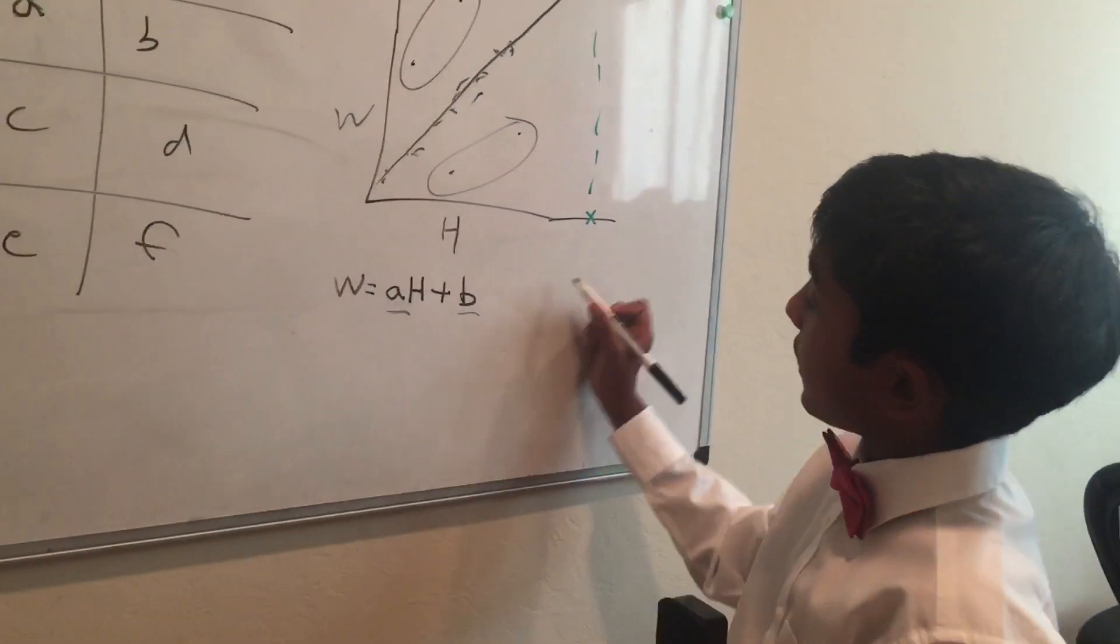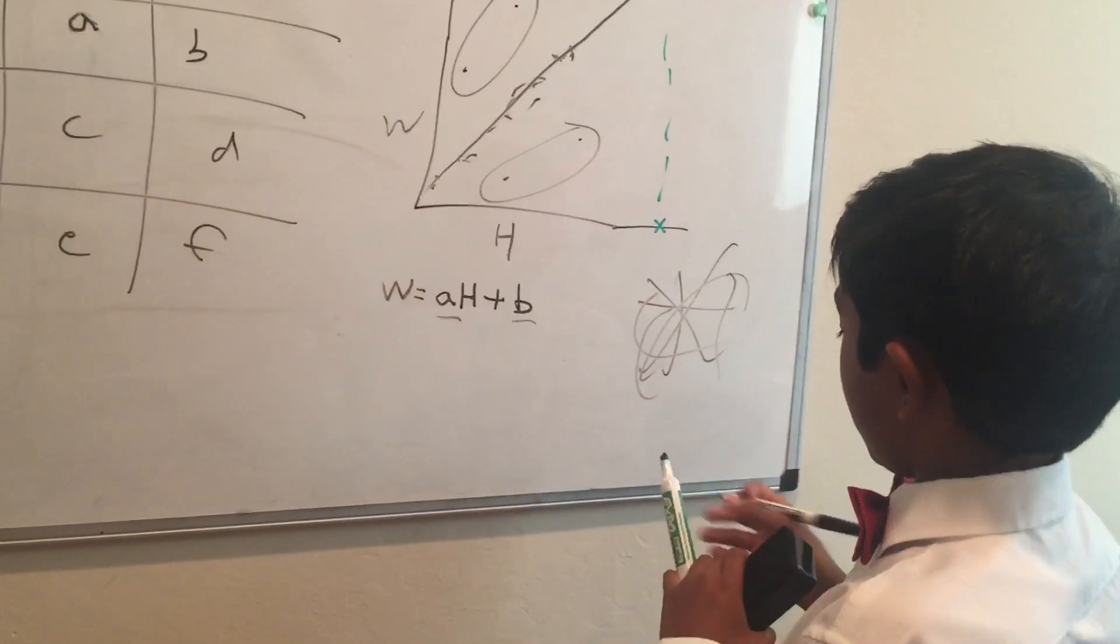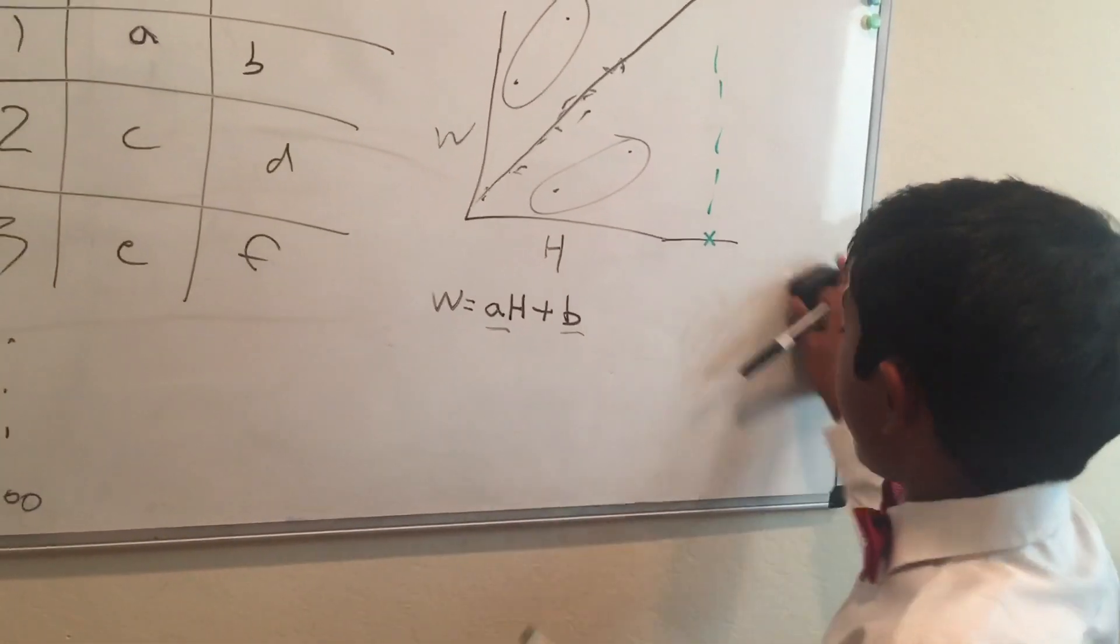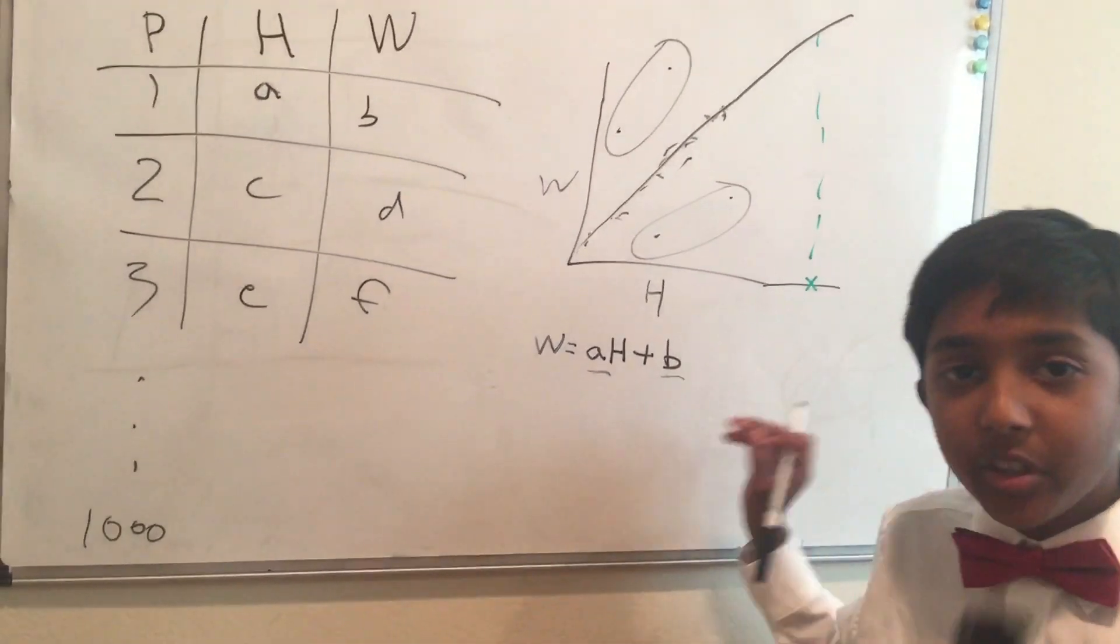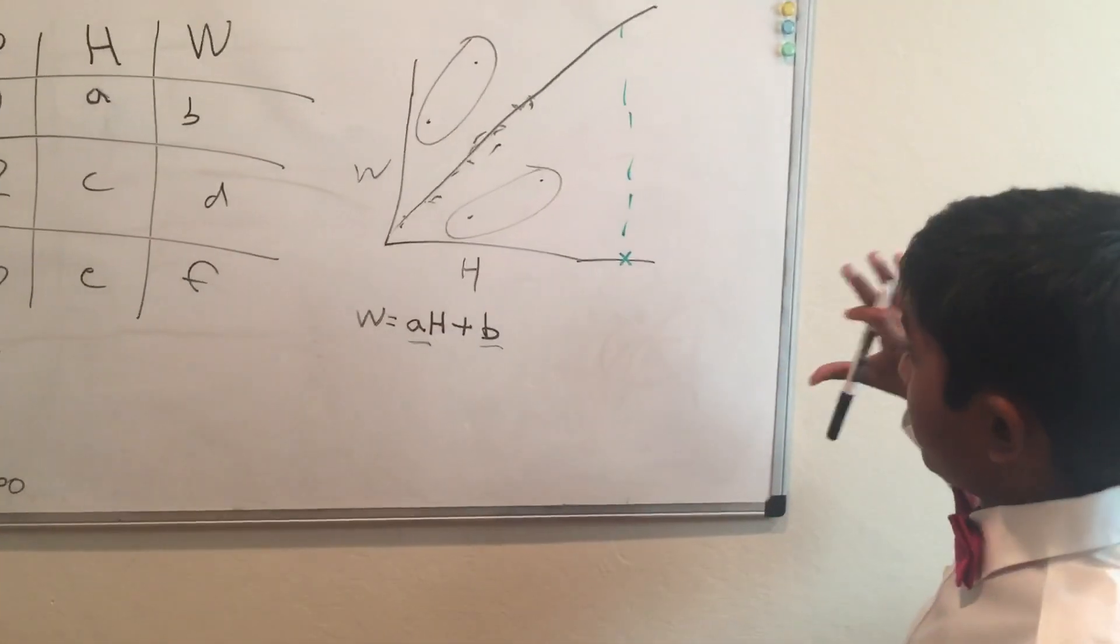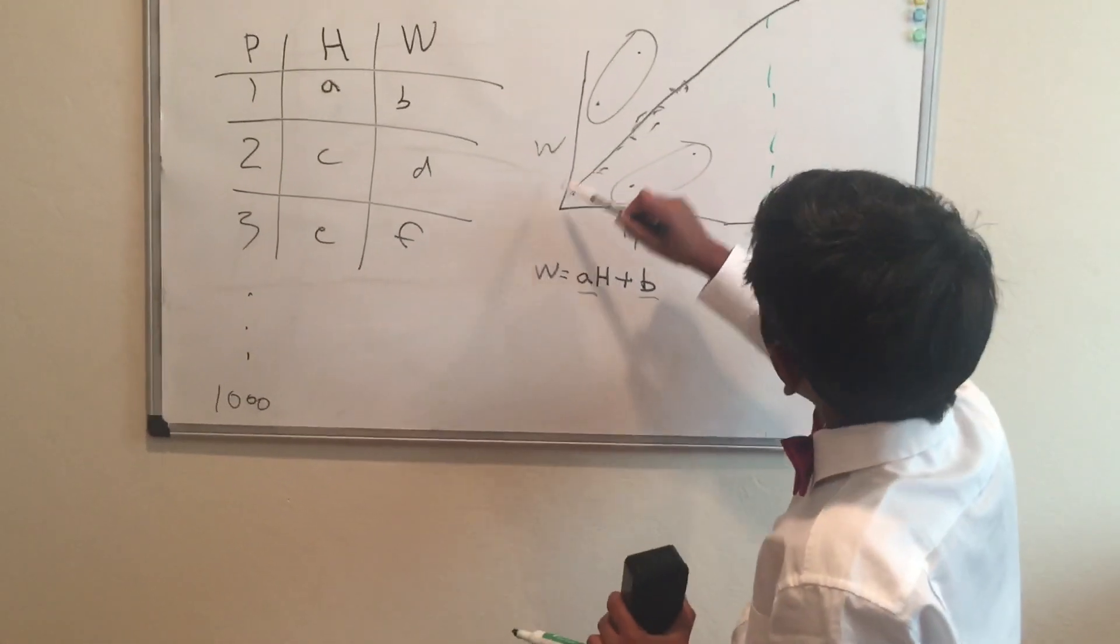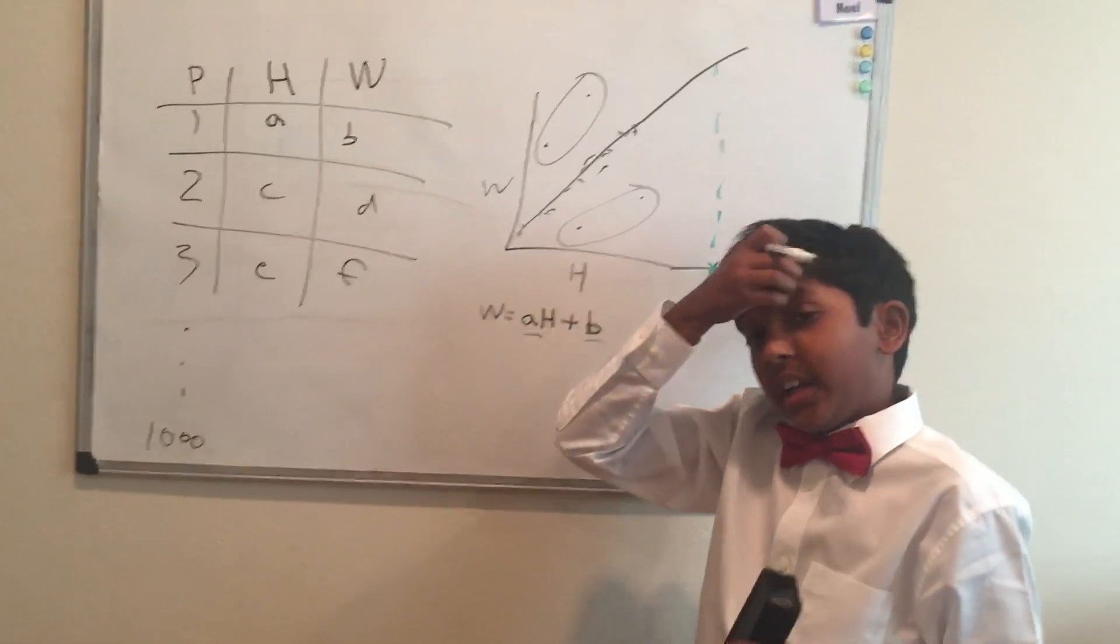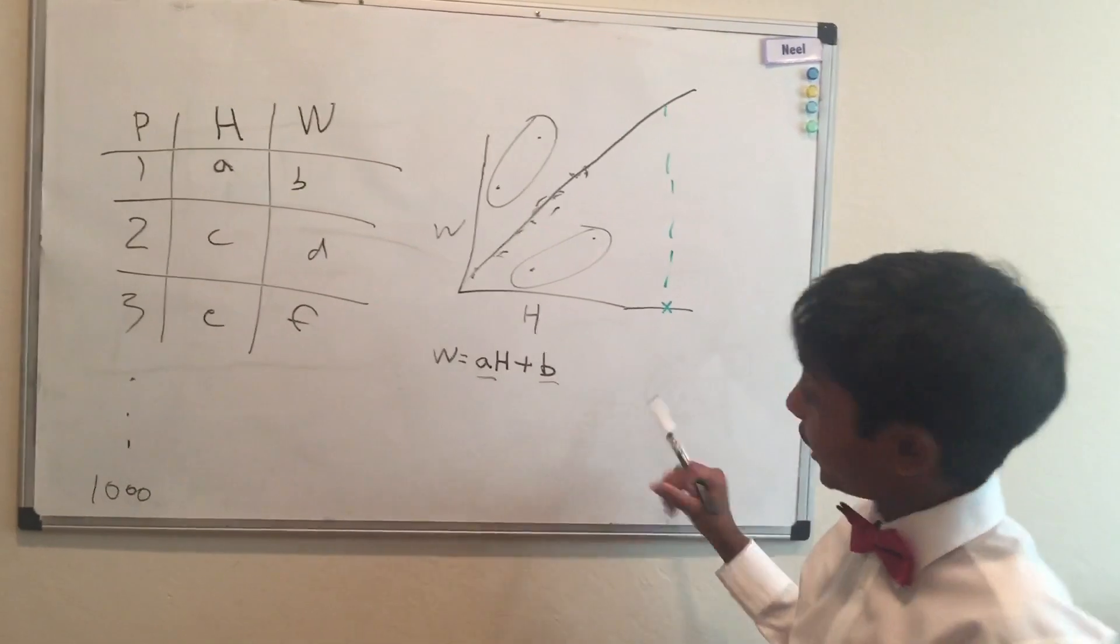For different a and b, your line can be anything. But if you have this equation, if you apply a and b in this way, it will always be a straight line. Now the problem is to find a line that suits you in predicting this other height.